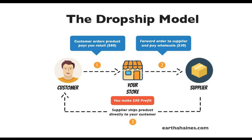As a drop shipper, you do not need to buy inventory upfront. That means you don't have to store any products in a warehouse or in your home. You basically just promote or sell products from your drop shipping suppliers, and your suppliers are the ones that actually ship the items to your customers. If you look at this diagram: a customer lands on your store and buys a product you're selling for eighty dollars. You then take their information and buy that product from your drop shipping supplier who charges you thirty dollars. The supplier ships that item directly to your customer, and you make a profit of fifty dollars.